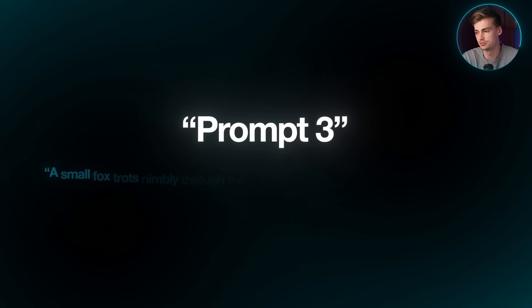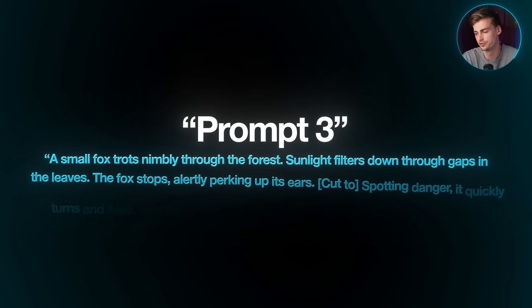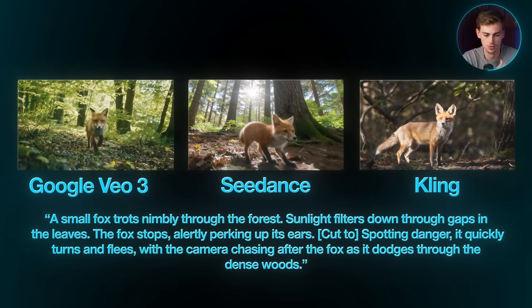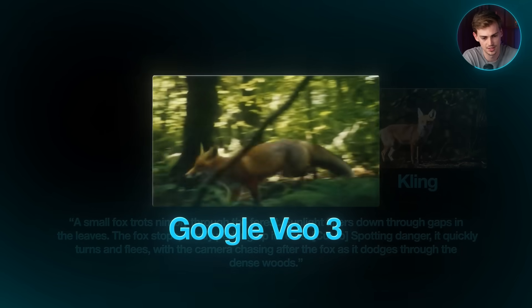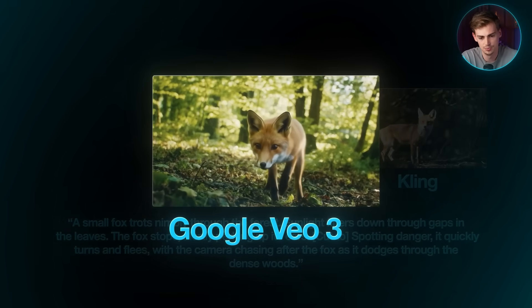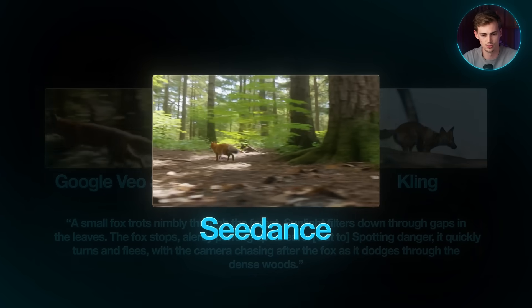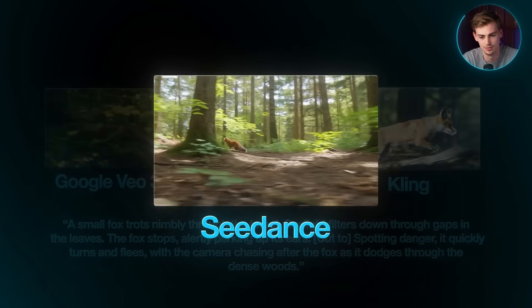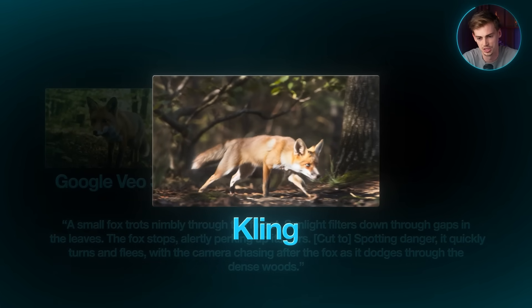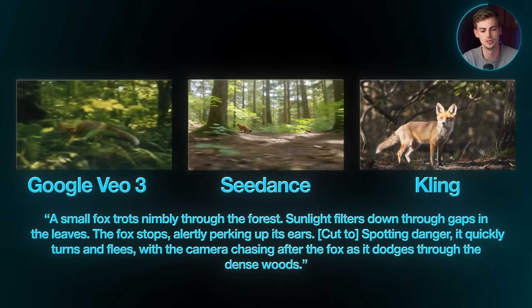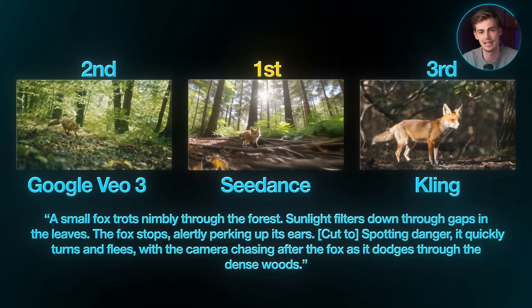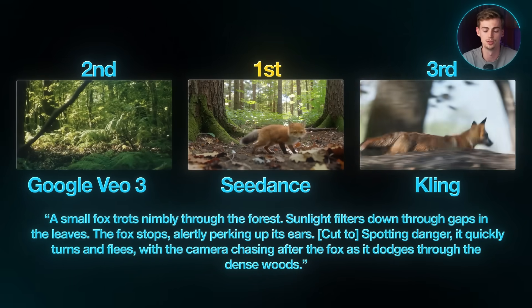Prompt three — a fox running through the forest, sunlight filtering through leaves, the fox stops alertly perking up its ears, then quickly turns and flees with the camera chasing after it. Google VO3 starts with a static camera angle, the fox gets alerted and moves away into a second camera angle — quite good. Seedance has the camera following the fox as it zooms out, then a second angle where it runs away — this looks incredibly realistic. Kling has the fox looking around then running away but doesn't quite follow the prompt. Order: Seedance first, Google VO3 second, Kling third.